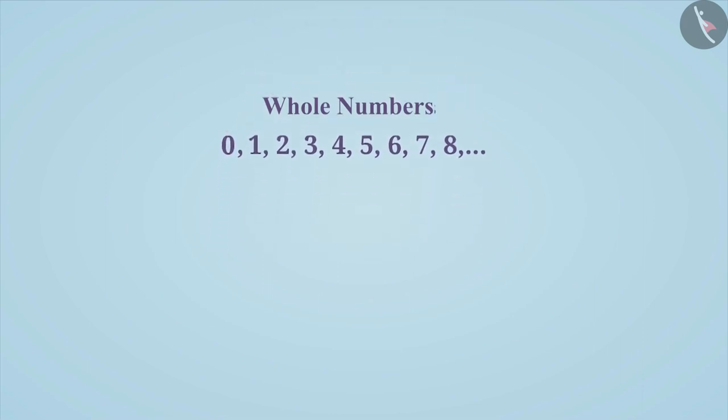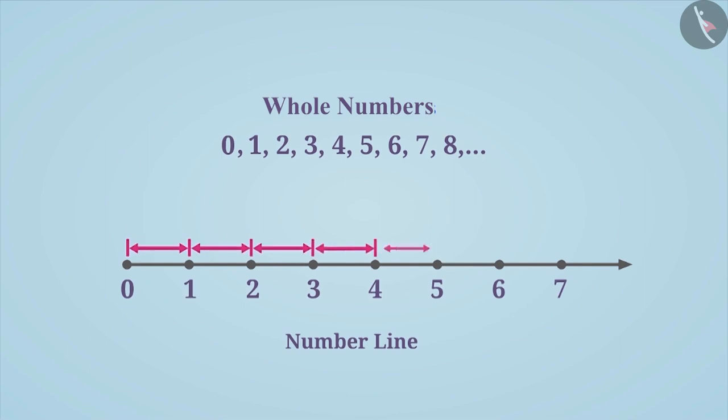Number line is a suitable way to understand much about whole numbers. The number line is a straight line on which the numbers are placed at equal distances. The equal distance is called unit distance.